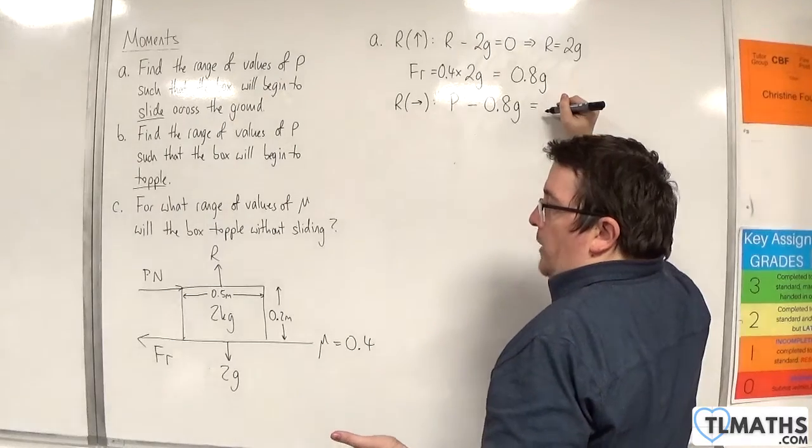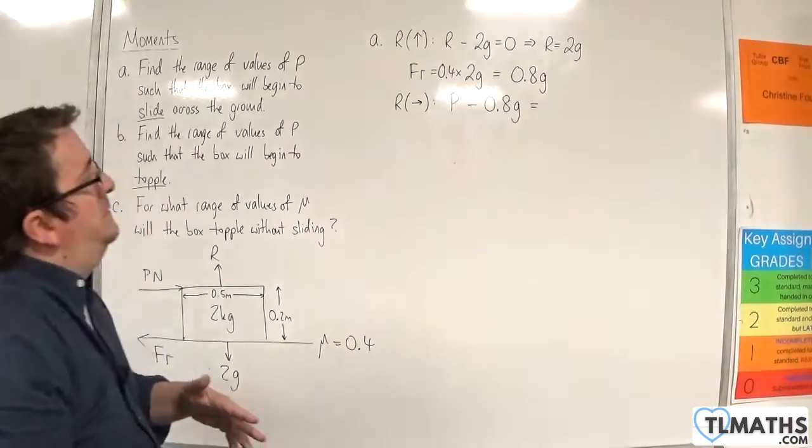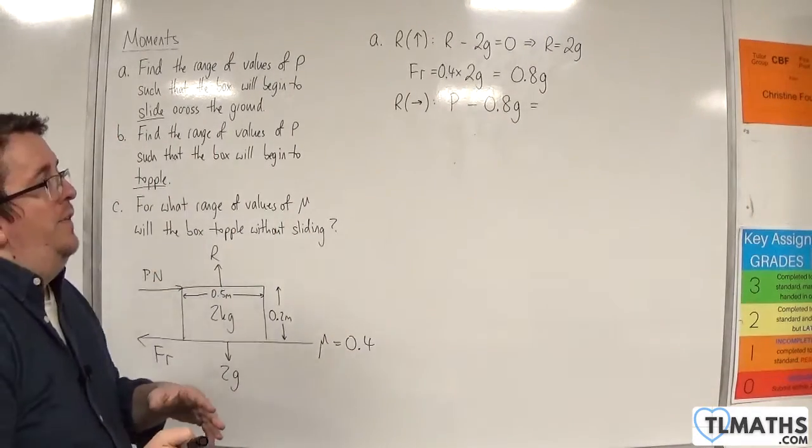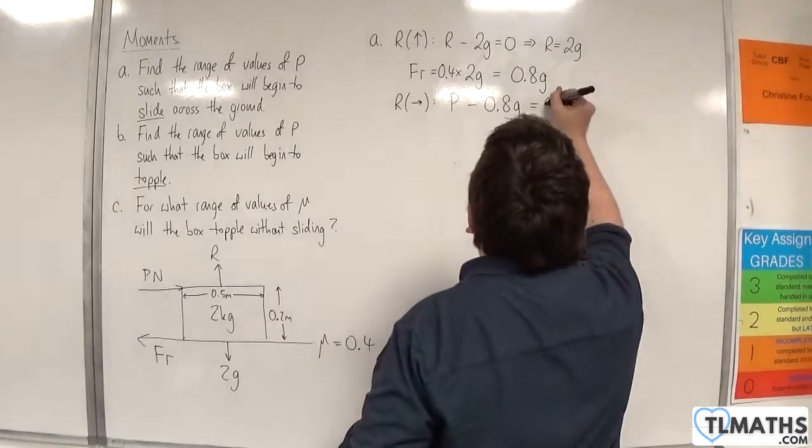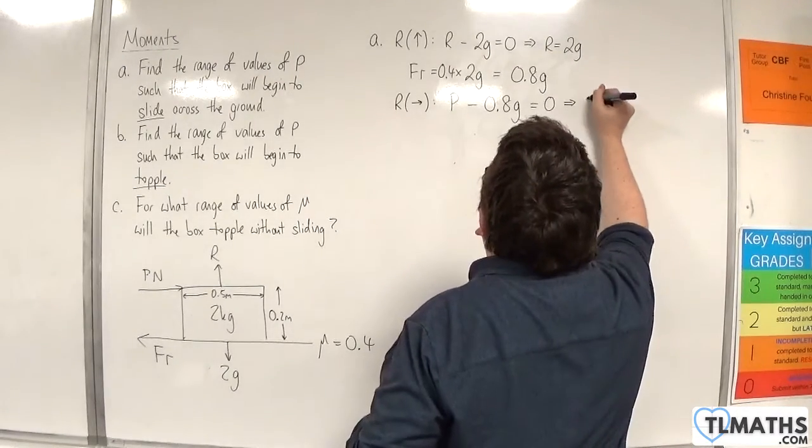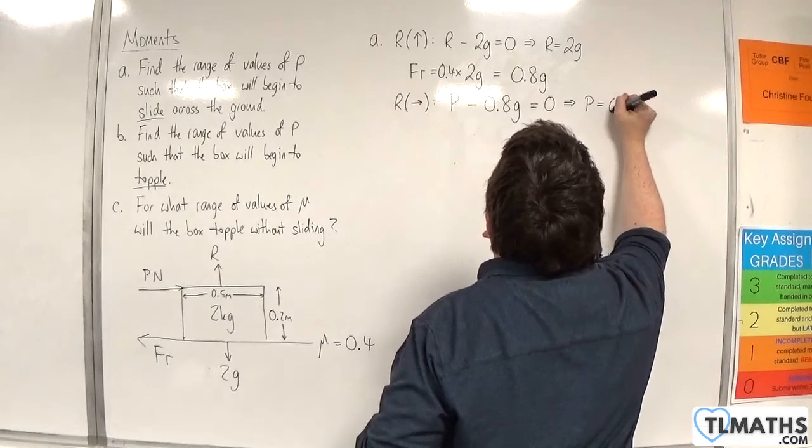If we're on the point of moving, then I can put that as equal to 0 at the start initially. So that means that p would have to be equal to 0.8g.